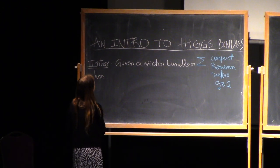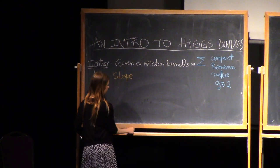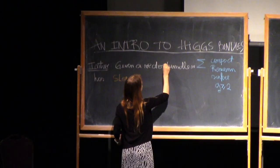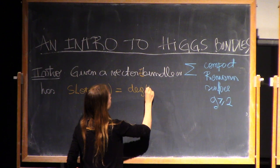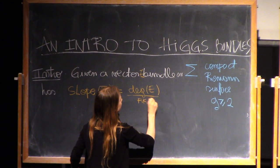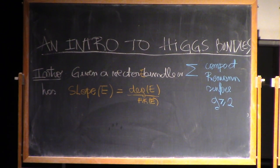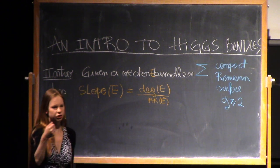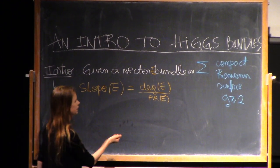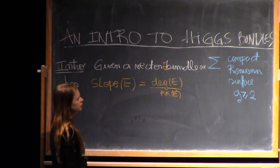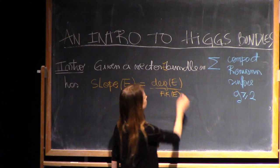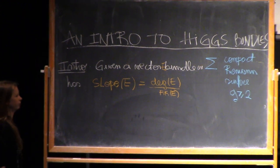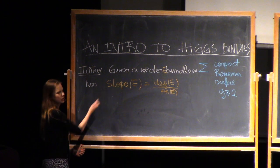A vector bundle on sigma has a slope. The slope of E is the degree of E over the rank of E. If you haven't seen degrees and ranks before, you can think of the rank as the dimension of your fibers over each point of the Riemann surface — the fiber is the vector space, and its dimension is the rank. The degree will be the number of zeros that a holomorphic section of the bundle has. So if I think of E over sigma, the section will be a map from sigma to E that will have zeros sometimes, and the number of zeros will be the degree.